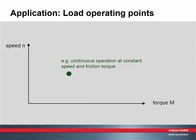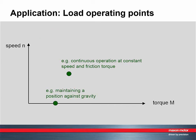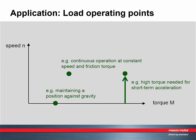For example, there can be a constant operation at the given torque and speed. There might be an operation at higher speed but at lower torque, or maintaining a position against some external force at zero speed. Another possibility is speeding up with some mass inertia to overcome — usually that's where the highest torques occur.